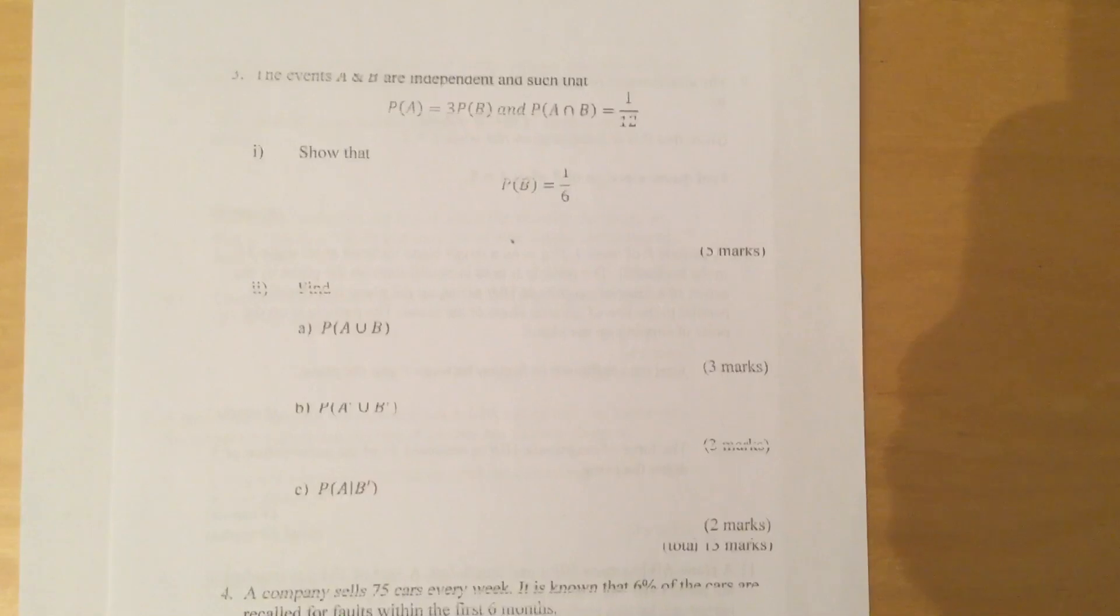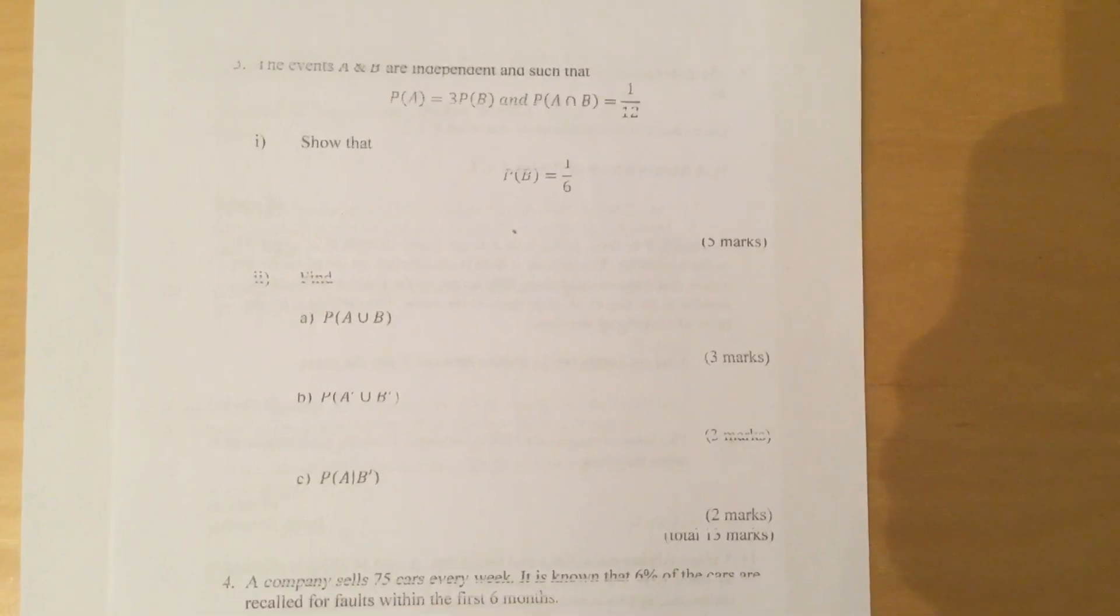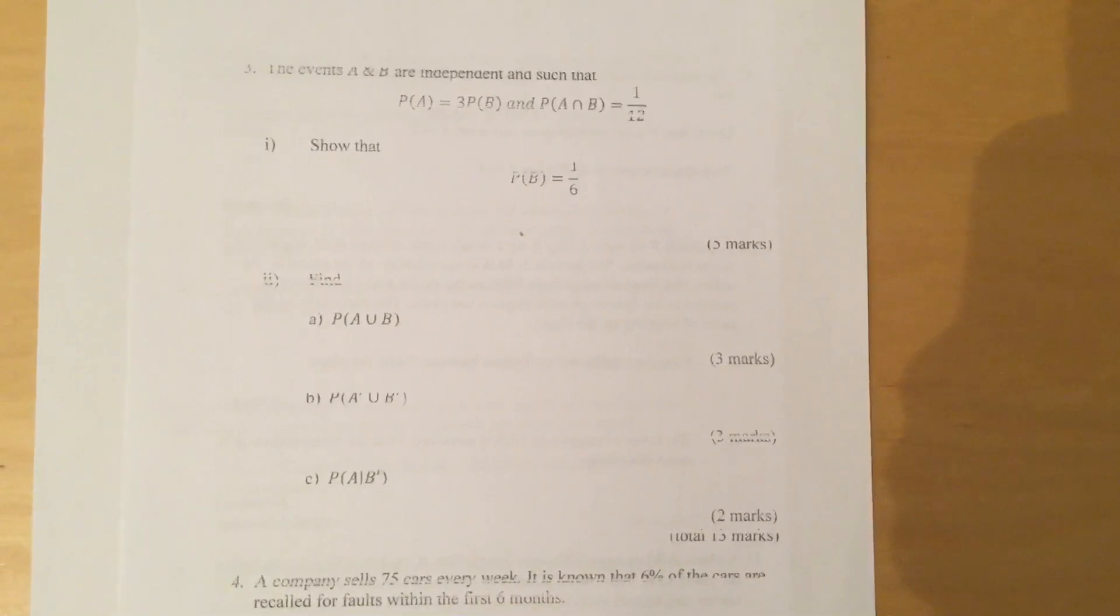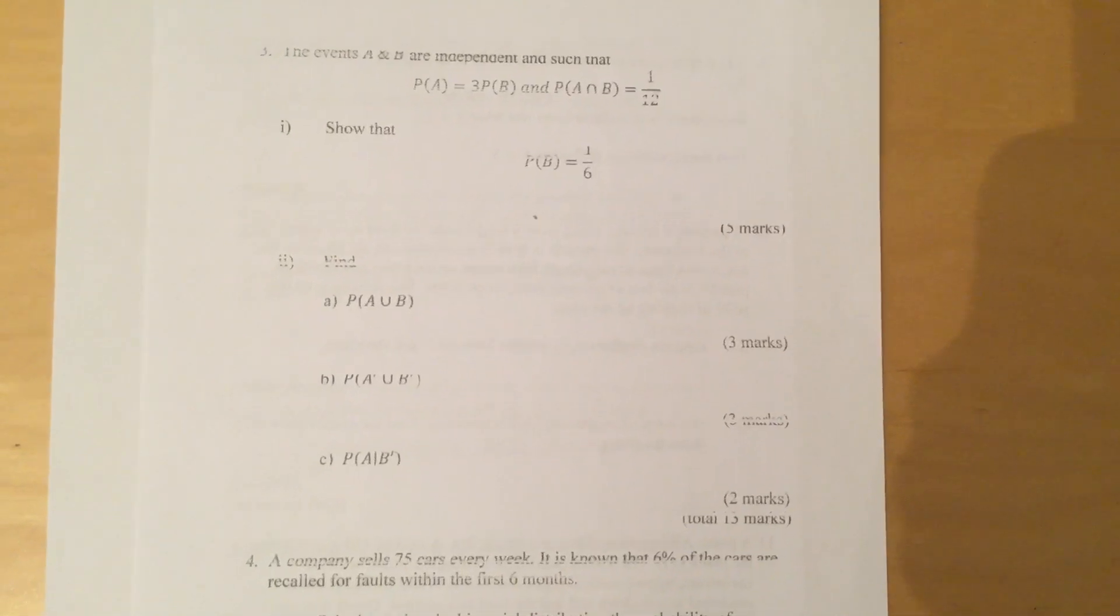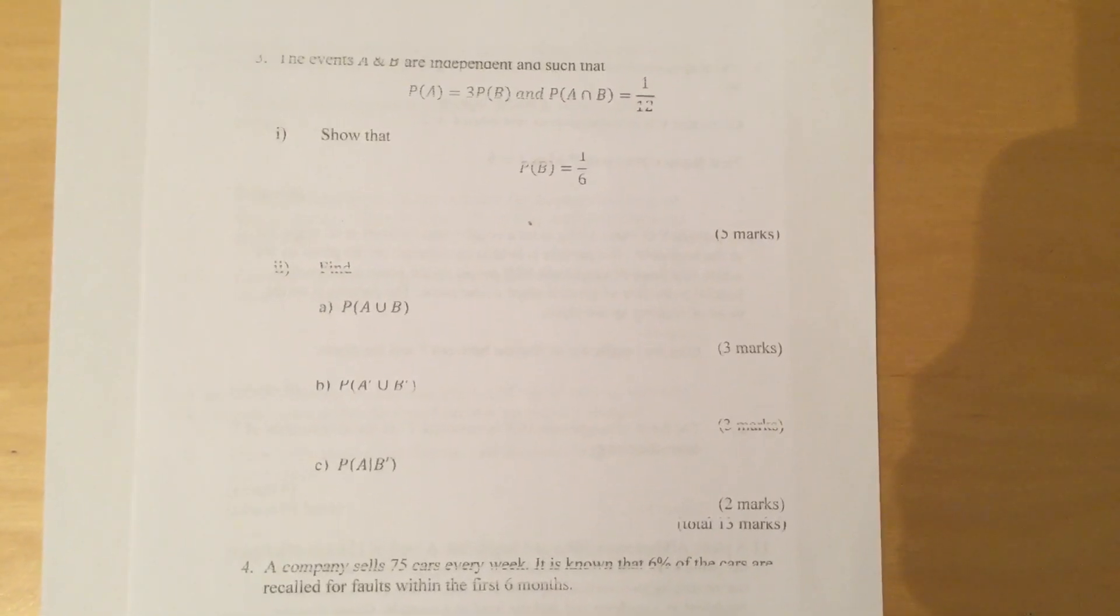Part 2: Find part A, probability of A union B; part B, probability of A dash union B dash; and part C, probability of A given B dash.